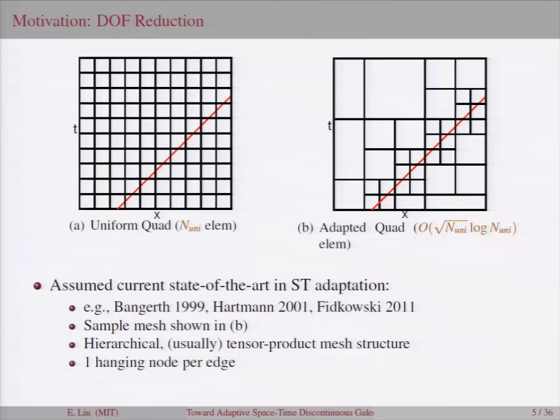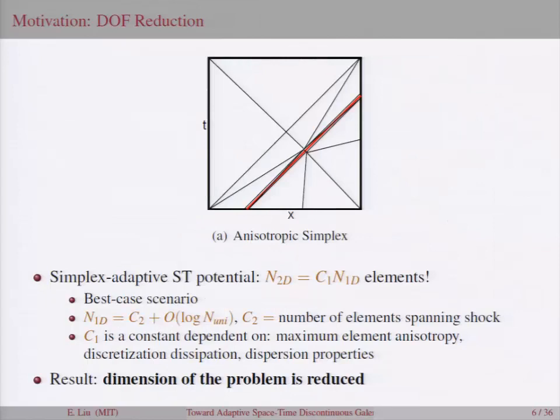The current state of the art in space-time adaptation and also AMR type methods might produce a mesh that looks something like this. It's an adapted quadrilateral mesh. You can see that it has a hierarchical type of structure, and the elements are all potential product type. And the number of elements here is on the order of the square root of n-uniform. So we've lost a factor of the square root of n-uni, but we can do better. If we were to use simplex elements, then in the best case scenario, what we might be able to achieve is to have the total number of elements in space-time be only a constant factor larger than the number of elements in 1D. So this might allow us to solve potentially large complex unsteady problems using only a little bit more effort than we would have to apply to compute a steady solution. And this result appears basically that the dimension of the problem is reduced. So I'll come back to some more concrete examples of this, but I hope this kind of motivates, at least gives you a high level idea of what I'm trying to do.